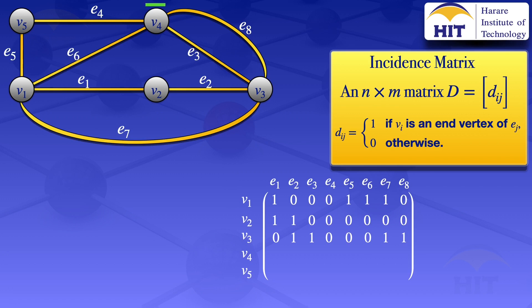Moving on to vertex v4, v4 is an end vertex for edges e3, e4, e6, and e8. So we place ones at e3, e4, e6, and e8, and zeros on all other positions.